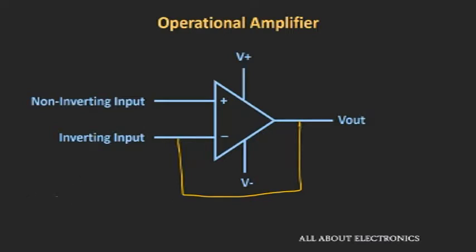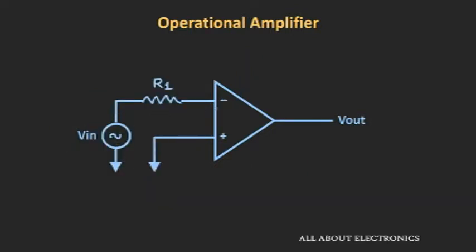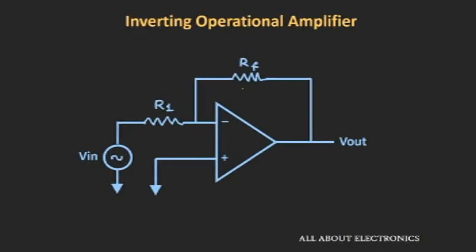There are three ways to apply input to this op-amp: first, applying input to the non-inverting terminal and grounding the negative terminal; second, providing input to the inverting terminal and grounding the positive terminal; and third, providing input to both terminals. We will first look at the case of applying input to the inverting terminal through resistor R1, with negative feedback from output to the inverting terminal via feedback resistor RF. This is known as the inverting op-amp configuration. Now let's find the relationship between the output and input voltages.